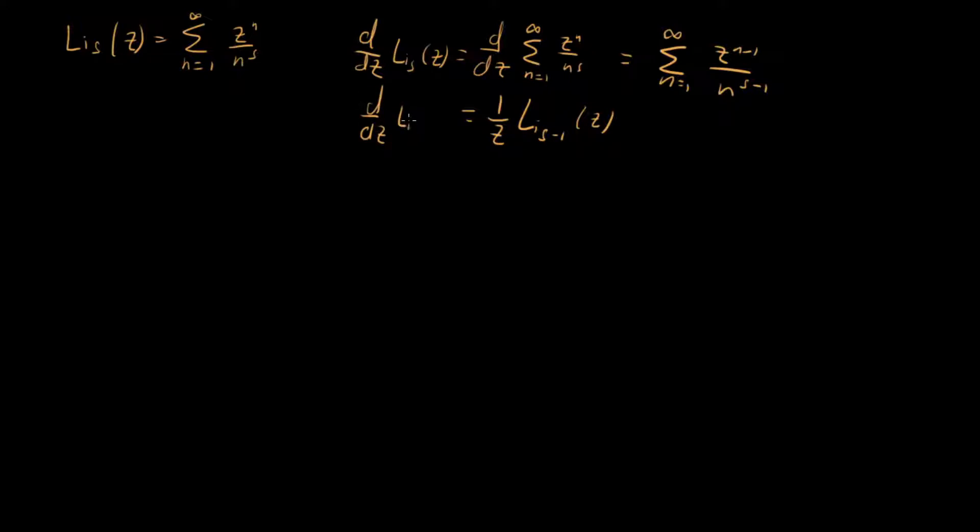So this right here is an important polylogarithm property because it tells you that if you take the derivative of your polylogarithm, then you don't really have to do any work. You just say, well, 1 over z and then shift your polylogarithm down by 1. Shift this s down by 1 and you've got it.